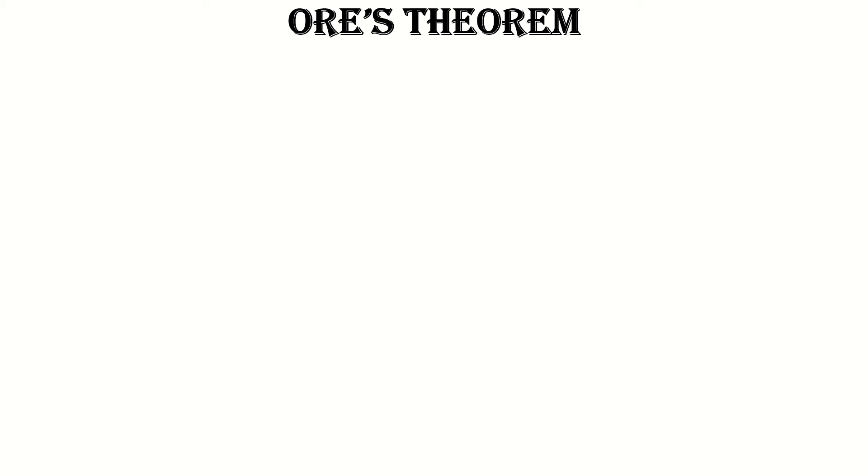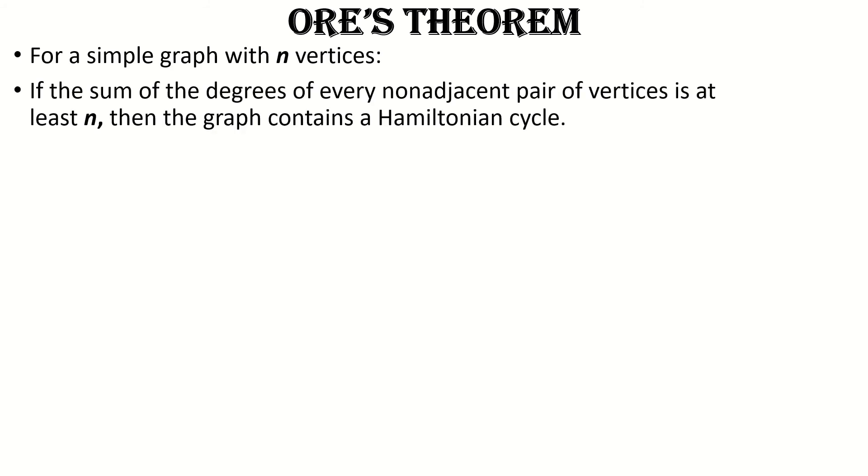Ore's theorem, a generalization of Dirac's theorem, states that if we have a simple graph with n vertices, and that for every non-adjacent pair of vertices in the graph, their degrees sum to at least n, then the graph contains a Hamiltonian cycle.